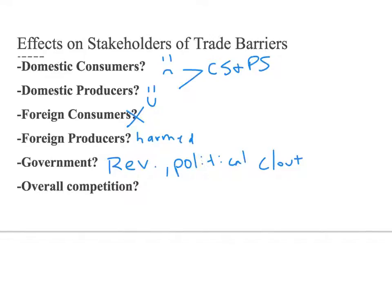Overall competition decreases as foreign producers are regulated, making the market less efficient and creating welfare loss. Welfare loss is a major consequence of trade barriers being less efficient than free trade.